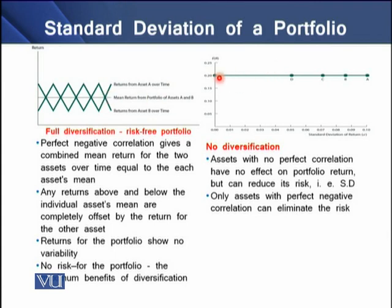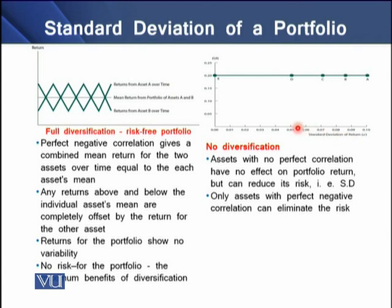On the right side, we see there is no diversification, shown by the straight line. Assets without perfect negative correlation have no effect on portfolio returns — they can only reduce its risk. All five portfolios A through E offer a rate of return of 20% to the investor, so there is a common return for every portfolio, but the variation is only in terms of standard deviation. Therefore, only assets with perfect negative correlation can eliminate risk and make a portfolio risk-free.